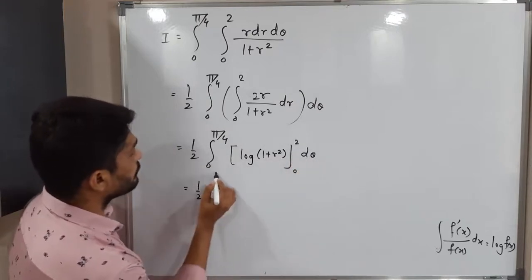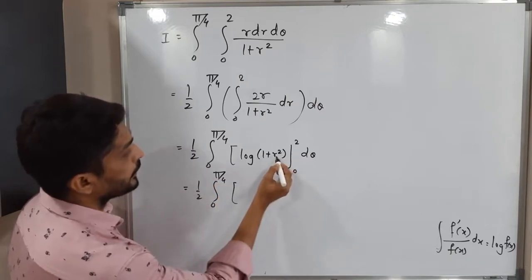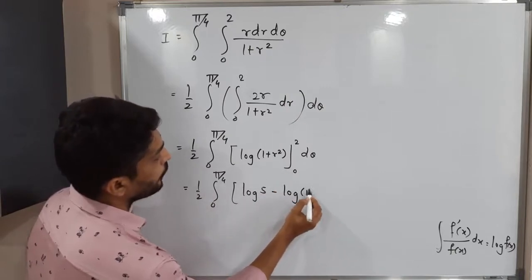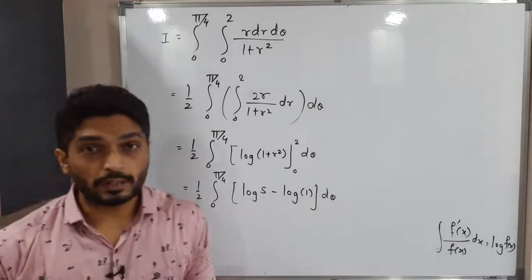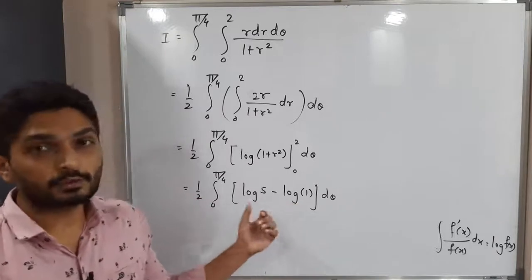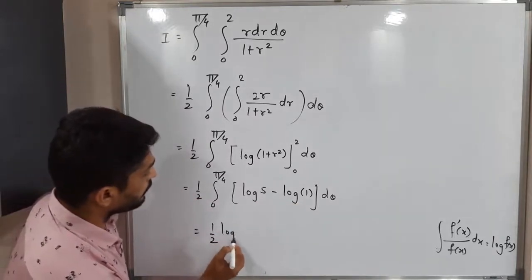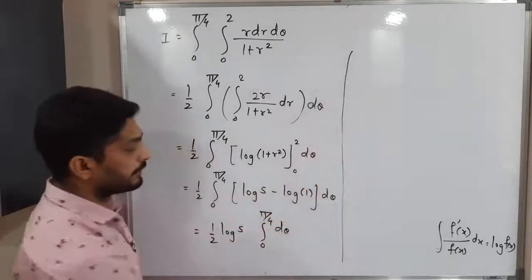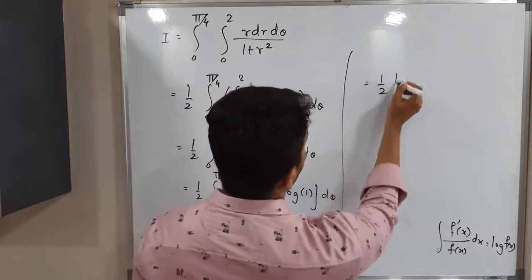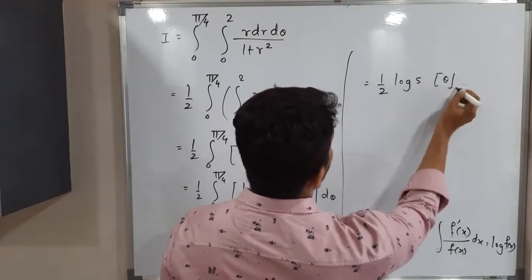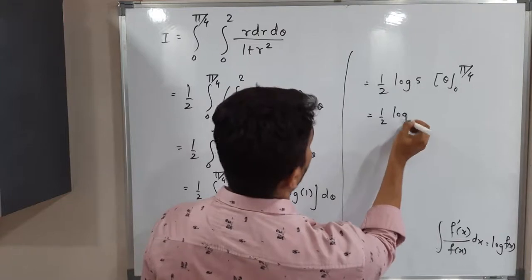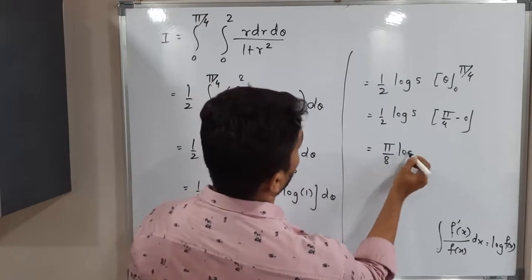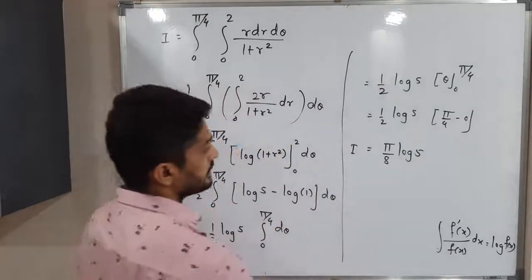Applying the formula, this equals (1/2) times the integral from 0 to π/4 of [log(1 + r²)] from 0 to 2, dθ. Substituting the limits: upper limit r equals 2 gives log(1 + 4) equals log 5; lower limit r equals 0 gives log 1 equals 0. So we get (1/2) log 5 times the integral from 0 to π/4 of dθ, which is (1/2) log 5 times [θ] from 0 to π/4. This gives (1/2) · log 5 · (π/4) = π/8 · log 5, which is the required answer.